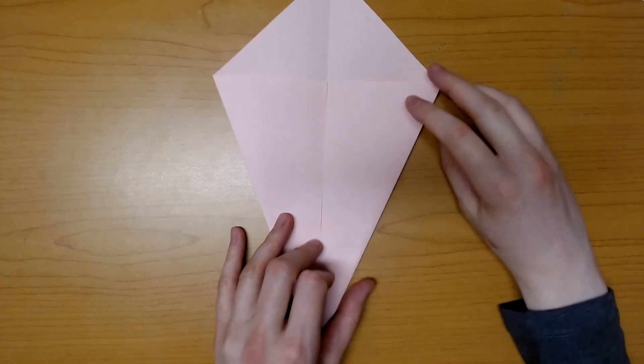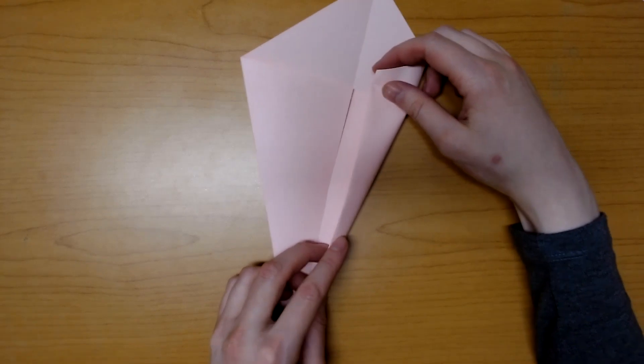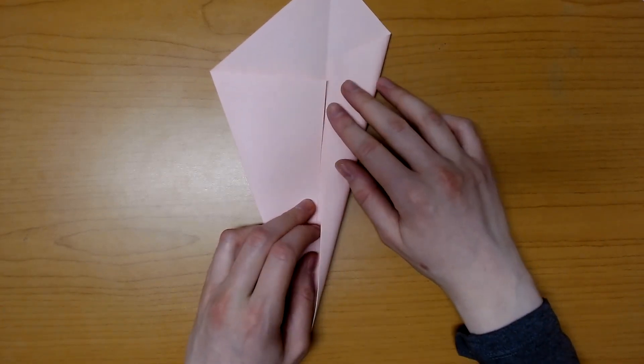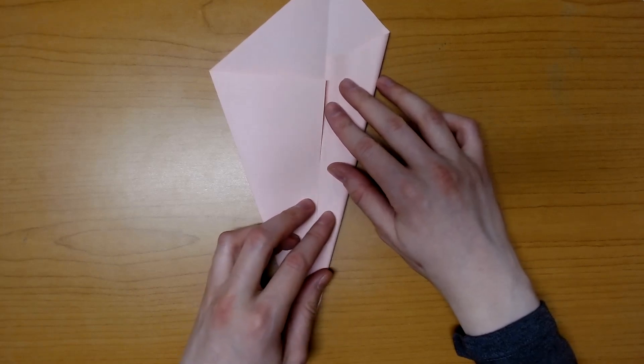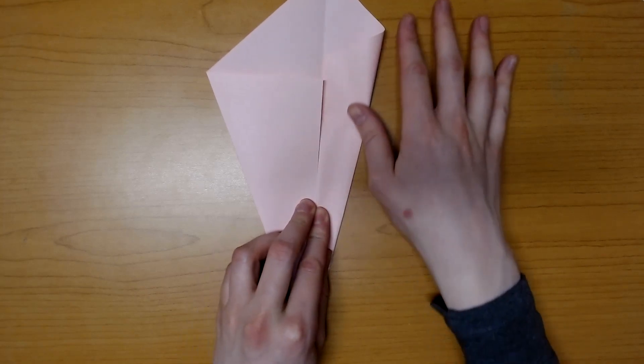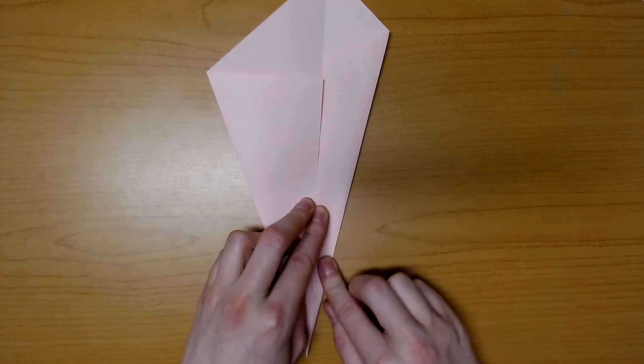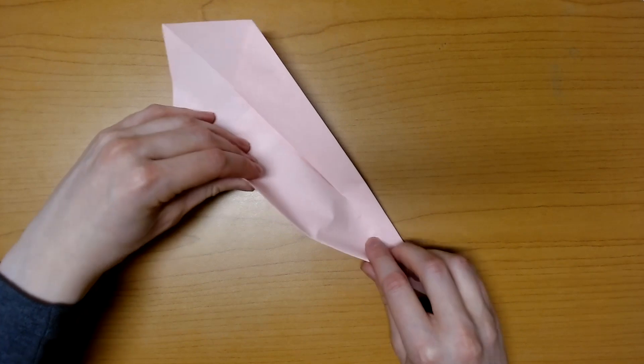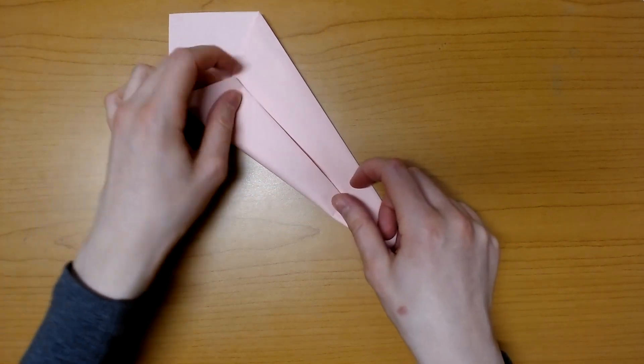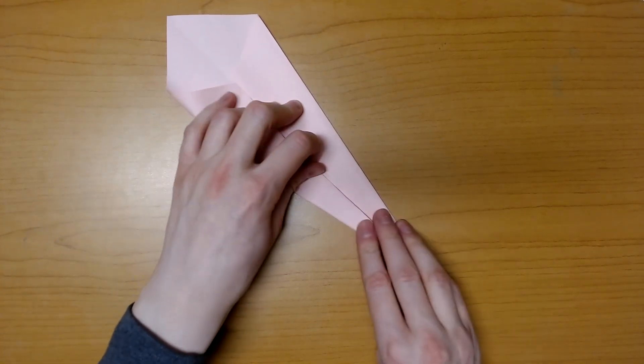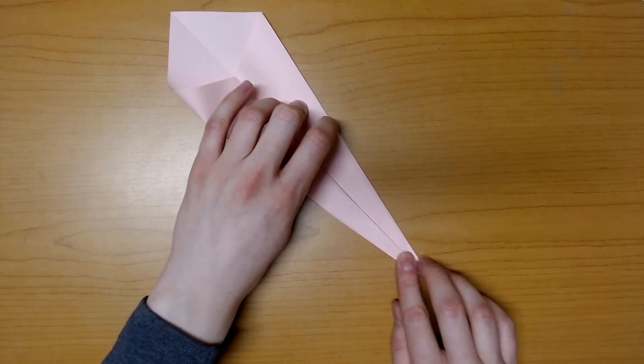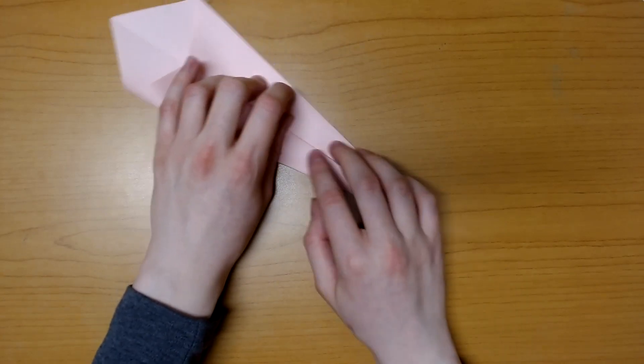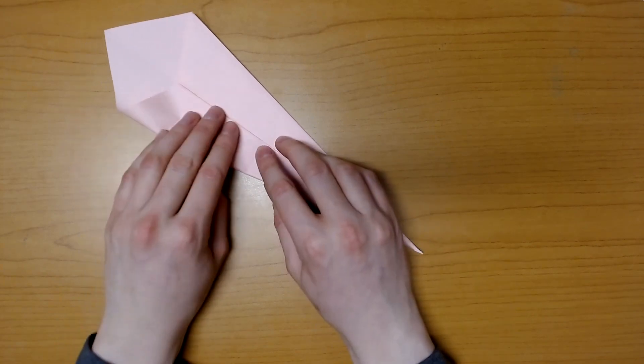Once you have that kite shape, we're going to make it into a narrower kite shape by doing the same thing again. Bring this outside edge, fold it into the middle. Crease it down smoothly and carefully so that you don't let it wander. Then do the same thing on the other side again. Smoothly and carefully crease it down and try to make as good a point on this end as we can, because this point is actually going to become the beak of the bird.